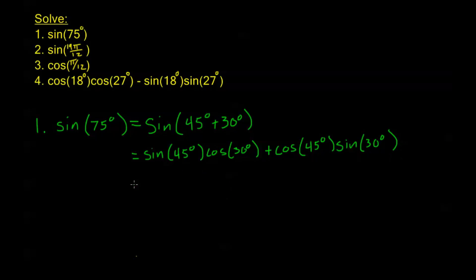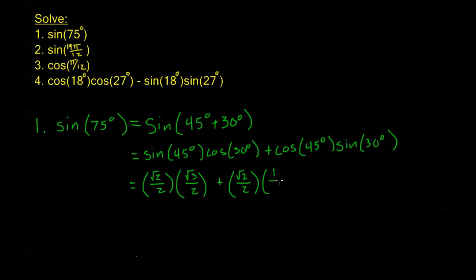We know the values of each of these trig functions. Sine of 45 degrees is root 2 over 2. Cosine of 30 degrees is root 3 over 2. Plus cosine of 45, which is also root 2 over 2, times sine of 30, which is 1 half. We have a common denominator of 4, giving us root 2 times root 3, which is root 6, and root 2 times 1, which is root 2.